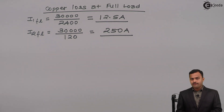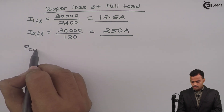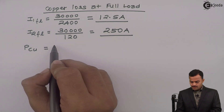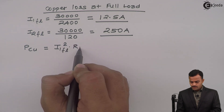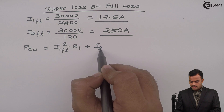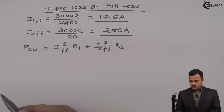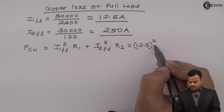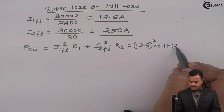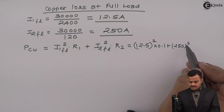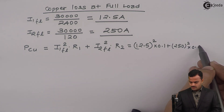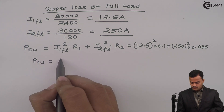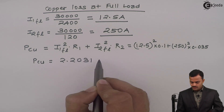Total copper loss at full load equals the sum of losses in both windings: copper loss = I1FL² × R1 + I2FL² × R2 = 12.5² × 0.1 + 250² × 0.035 = 15.625 + 2187.5 = 2.2031 kilowatt.